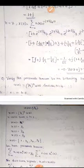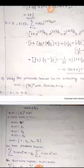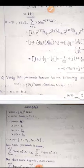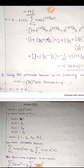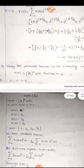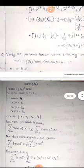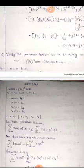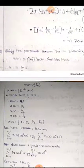Now let us verify Parseval's theorem for the following sequence: X(N) = (1/2)^N · u(N), where N varies from 0 to 3. We compute X(0), X(1), X(2), X(3). For n=0: x(0) = (1/2)^0 = 1, since u(N) is always 1 for the unit step signal.